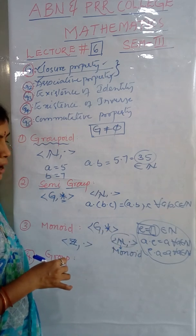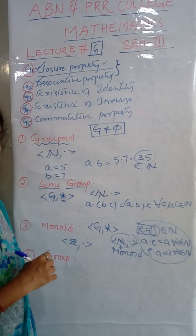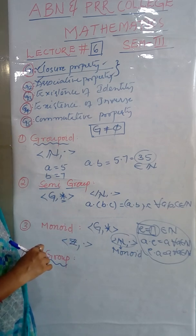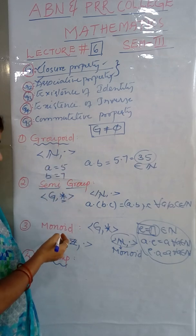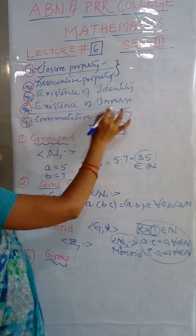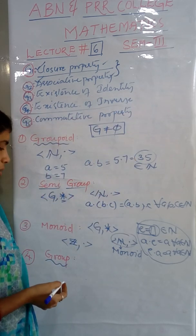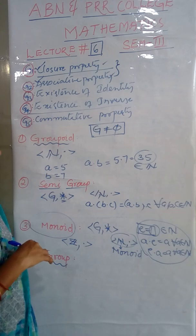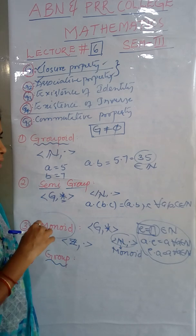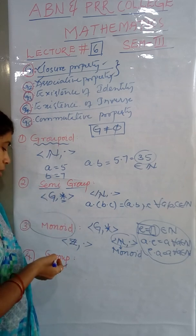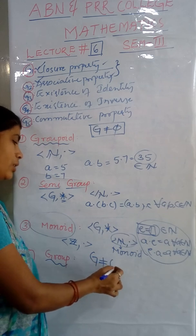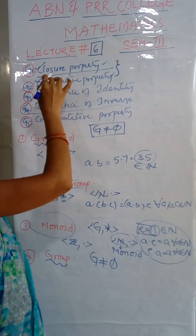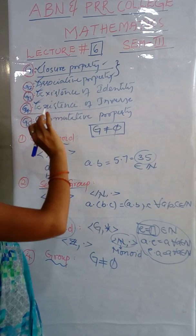Next, very important definition is group. Monoid, if it satisfies the property for existence of inverse, that means if all the elements in the monoid have inverse elements, then that set is a group. Or in other words, a non-empty set G is said to be a group under the composition star if it satisfies closure property, associative property, existence of identity, and existence of inverse.